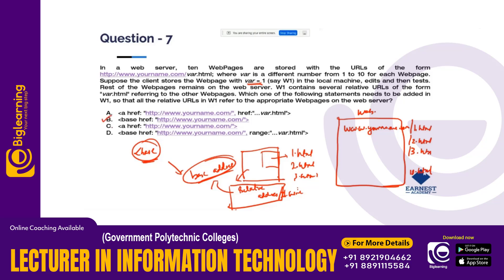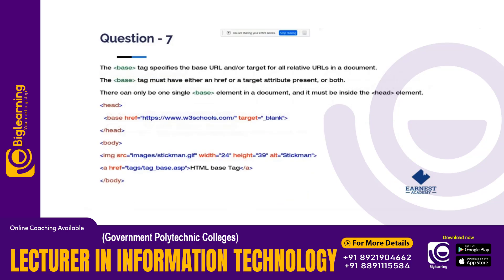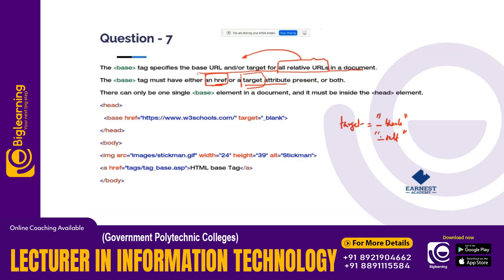The answer is the base href tag. The base tag specifies the base URL or the target for all relative URLs. All relative URLs will be called from the base URL. The base tag must have either an href or a target attribute. Target values include underscore blank or underscore self. The base address would be something like www.w3schools.com as an example.